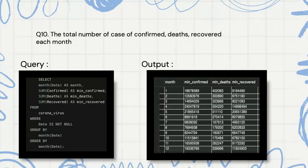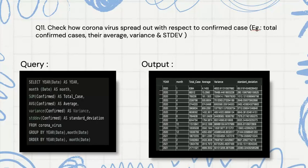The total number of cases — confirmed, deaths, and recovered — each month. Since we need to add them up, we are using the aggregate function SUM, totaling and grouping and ordering by month.